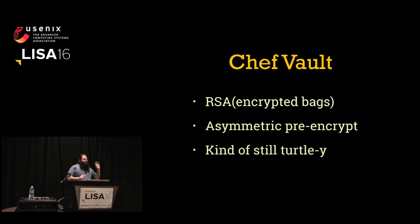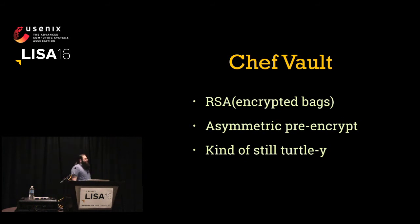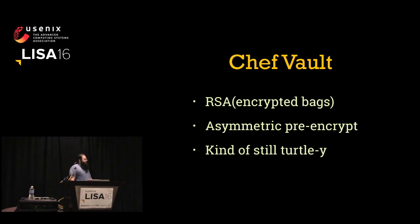Chef Vault — no relation to Ansible Vault — takes advantage of the fact that Chef uses RSA key pairs for API authentication to build an asymmetric pre-encryption system for distributing the symmetric keys of Chef encrypted data bags. It's an asymmetric pre-encryption system, so it's not great for auto-scaling or self-healing, because nothing is sitting around to keep regenerating those encrypted copies.